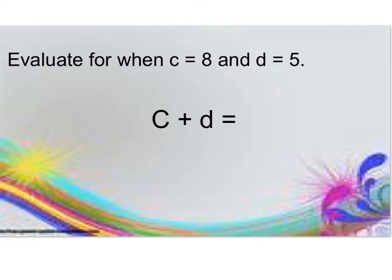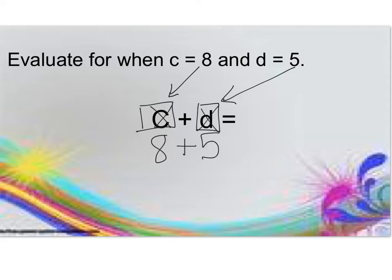Go ahead and pause and do this one by yourself. Come back when you have an answer to check. You'll see here we have c, which is going to be 8, and d, which is going to be 5. When I substitute for my variables, this c becomes an 8, and this d becomes a 5. 8 plus 5 is 13.